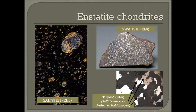A unique characteristic of enstatite chondrites is the behavior of typically lithophilic elements. Due to the extremely reduced environment they formed in, elements like sodium, calcium, potassium, aluminum, magnesium, and manganese, which typically bond with oxygen, instead bond with sulfur, creating a suite of uniquely extraterrestrial sulfide minerals.